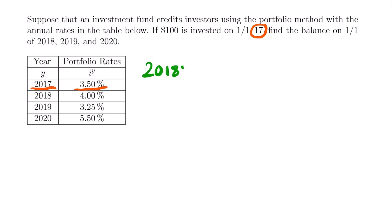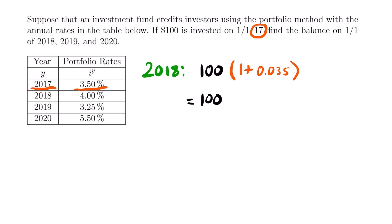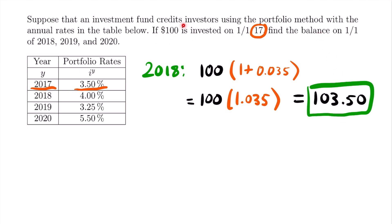The accumulated value in 2018 equals $100 times (1 + the portfolio rate for 2017). We are accumulating to the beginning of 2018, so we use the rate for 2017, not 2018. That gives us 100 × (1 + 0.035) = 100 × 1.035 = $103.50. That is the balance of this $100 investment in 2018 — it earned $3.50 in interest.